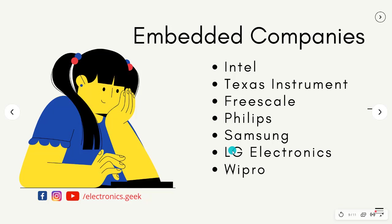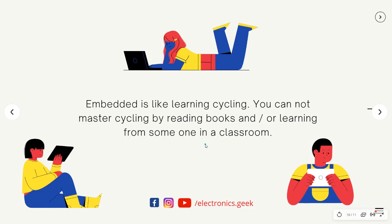Some of the companies that hire embedded engineers include Intel, Texas Instruments, Freescale, Philips, Samsung, LG, and Wipro. There are many other startups and companies as well. The pay scale is good at these companies. If you need information on more companies, you can comment below or message on Instagram.